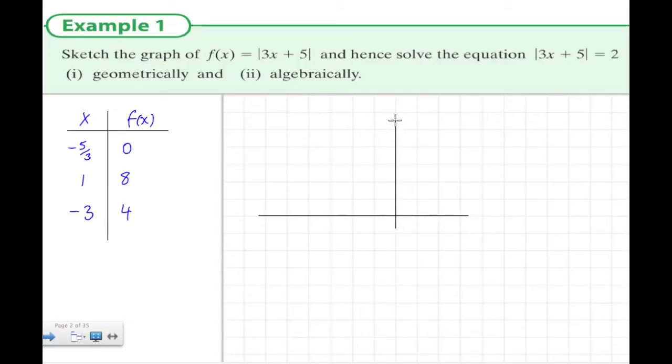We quickly sketch this graph. The x values go between minus 3 and 1. The f(x) is all above the x-axis going to a maximum height of 8. Minus 5 over 3 is the same as minus 1 and 2 thirds. We have the point 1, 8 and the point minus 3, 4. We take out a ruler and join these dots. It's always this V-shape when you have a linear modulus function.